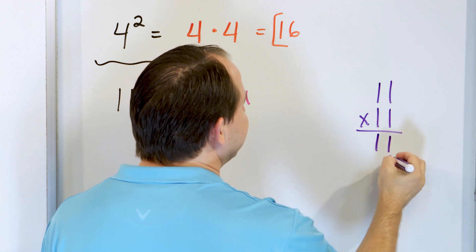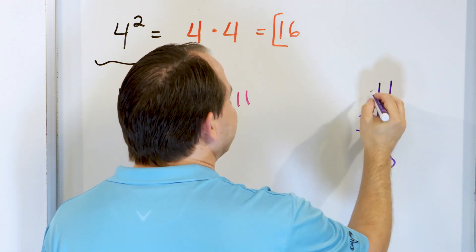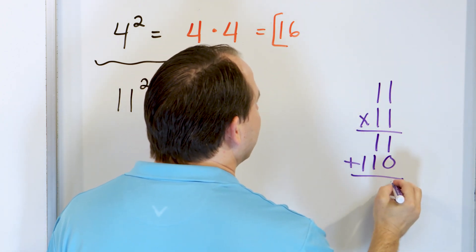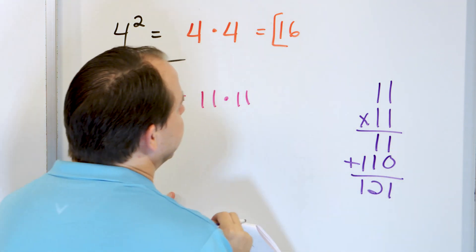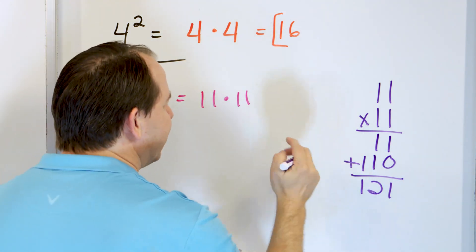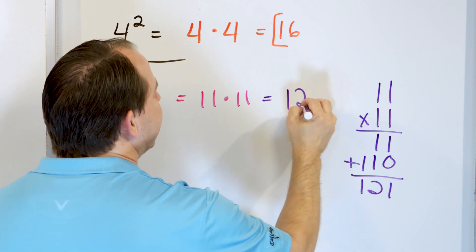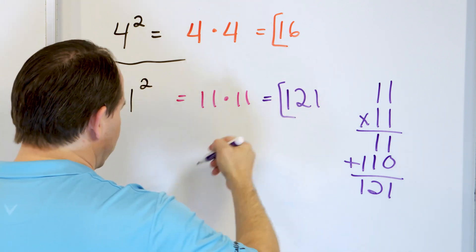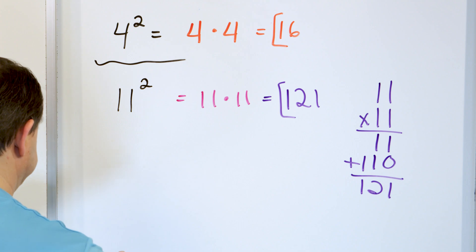If you don't remember 11 times 11, just multiply it out: 1 times 1 is 1, 1 times 1 is 1, drop a 0, 1 times 1 is 1, 1 times 1 is 1, then add. You get a 1, a 2, and a 1. So 11 times 11 is 121. If you don't remember it, just write it down and multiply. The answer is 121.